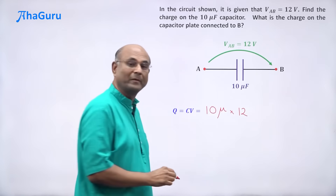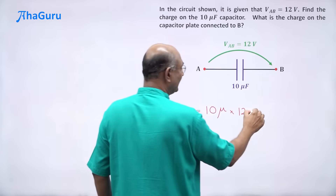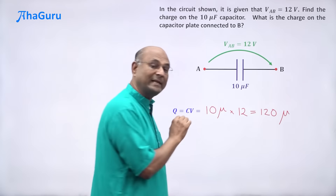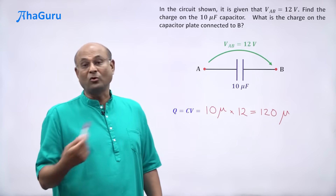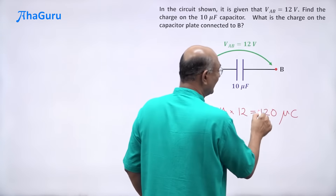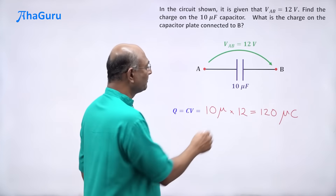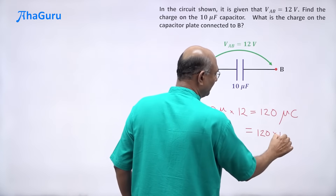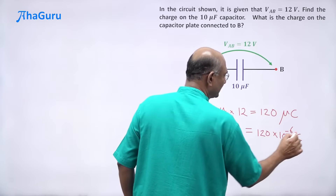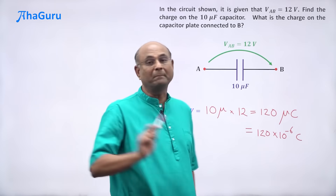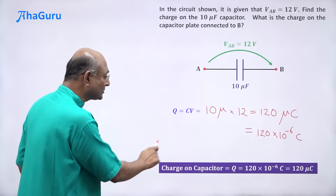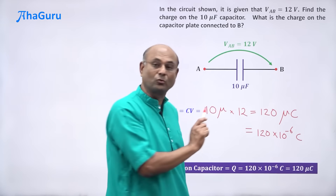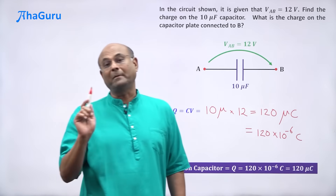So I am going to get 120 micro. The SI unit for charge is coulombs, so this will be 120 microcoulombs. You can also write it as 120 into 10 to the power of minus 6 coulombs, but usually we leave it in microcoulombs. The charge on the capacitor Q is 120 into 10 to the power of minus 6 coulombs, or 120 microcoulombs.